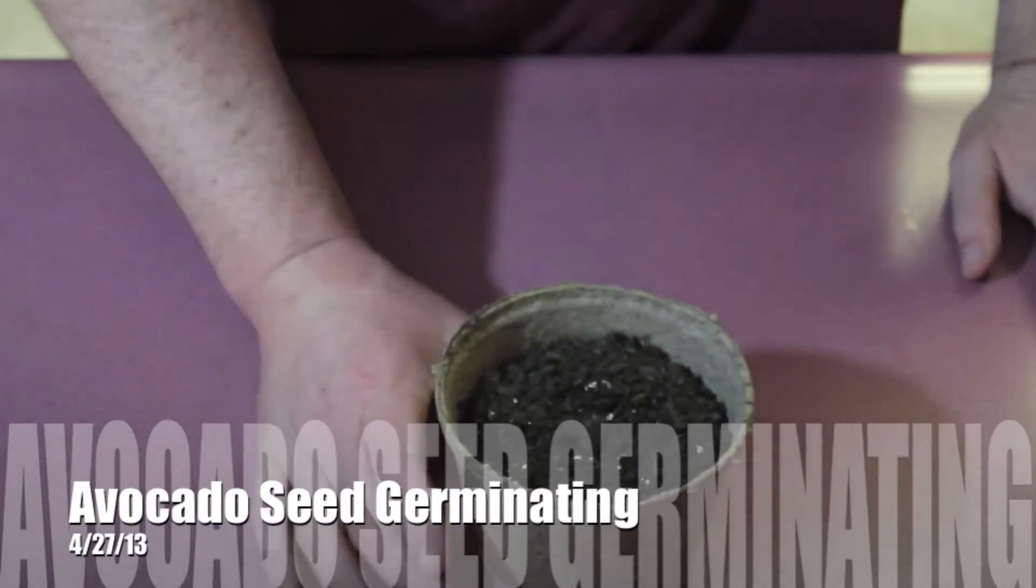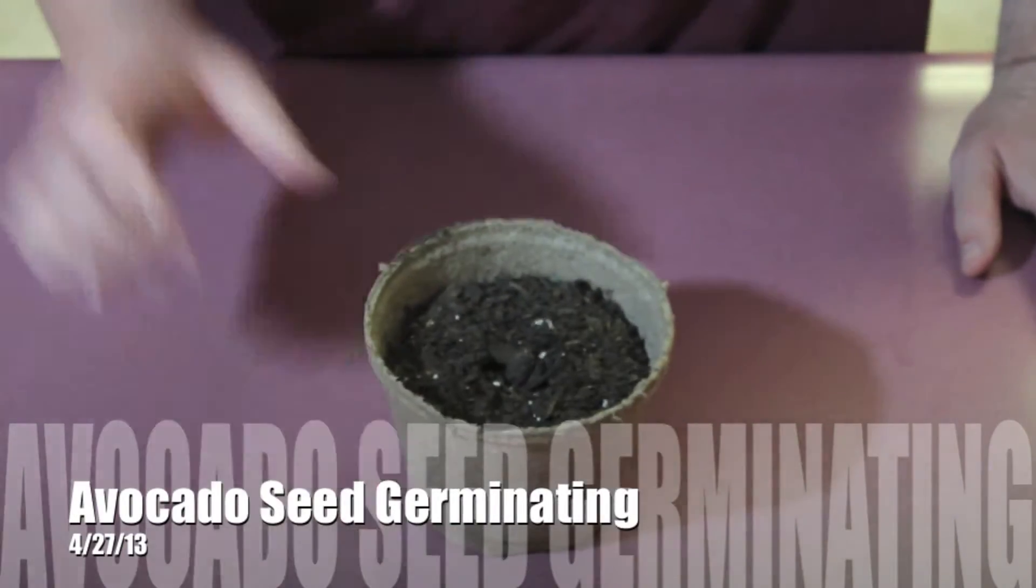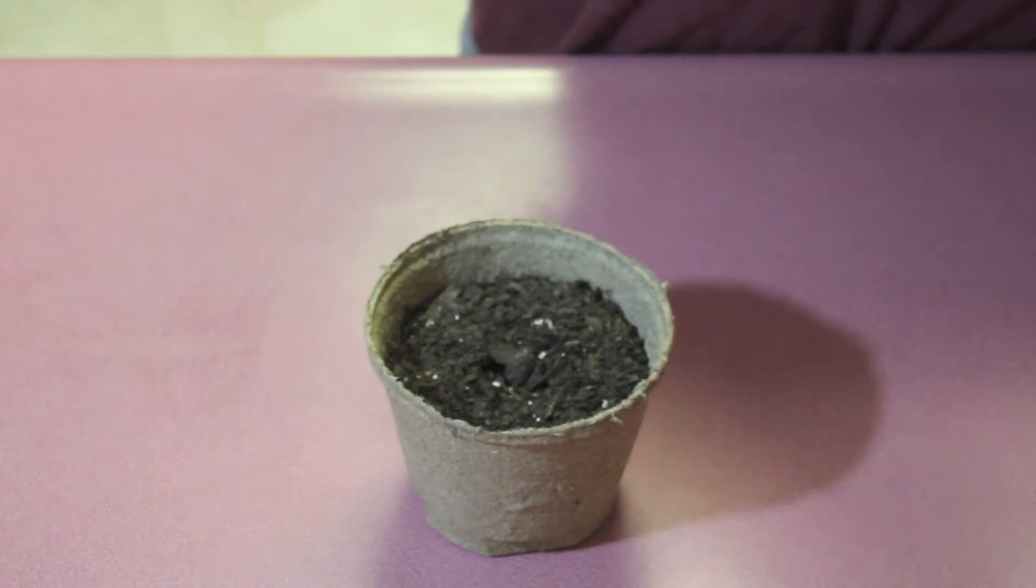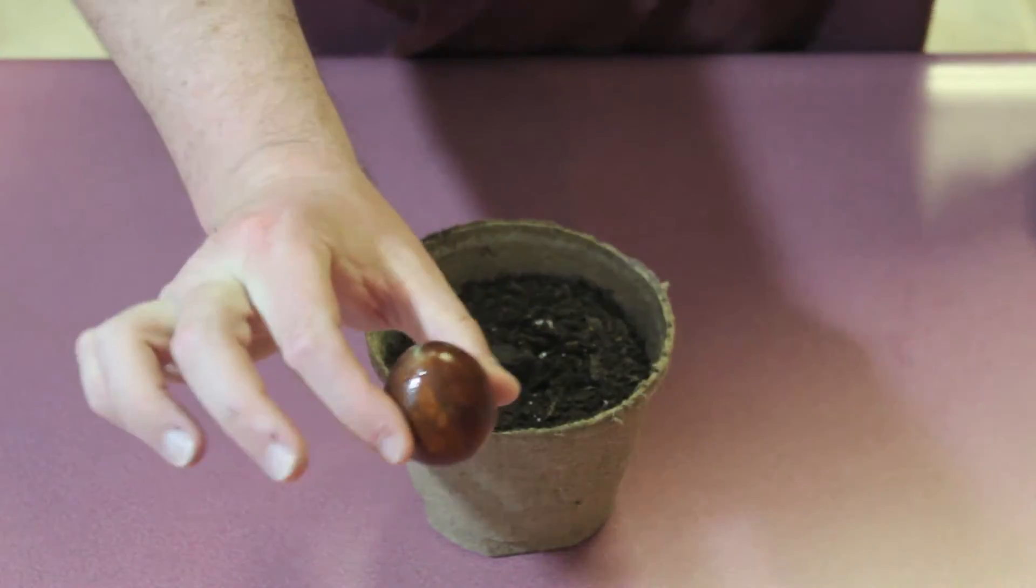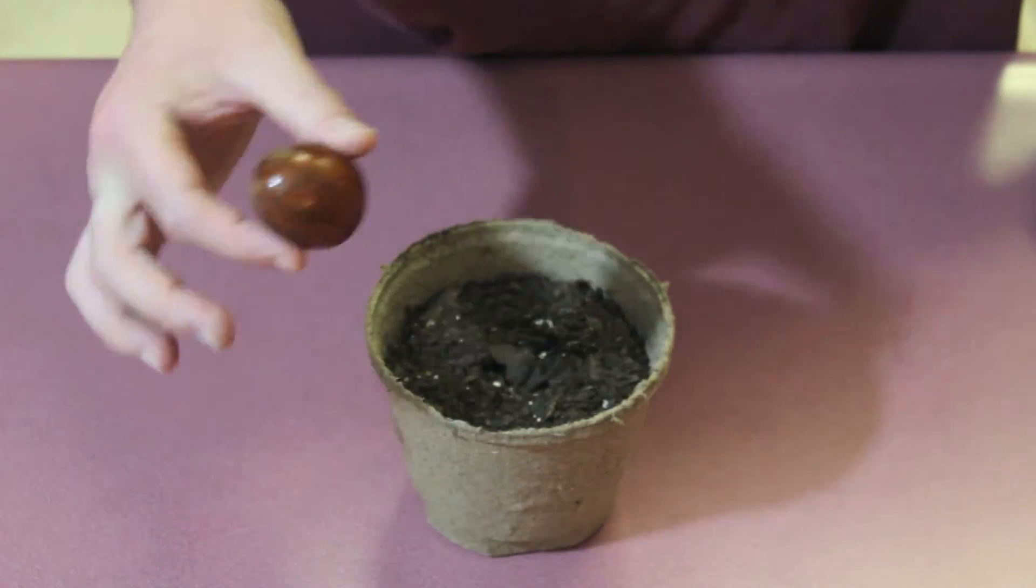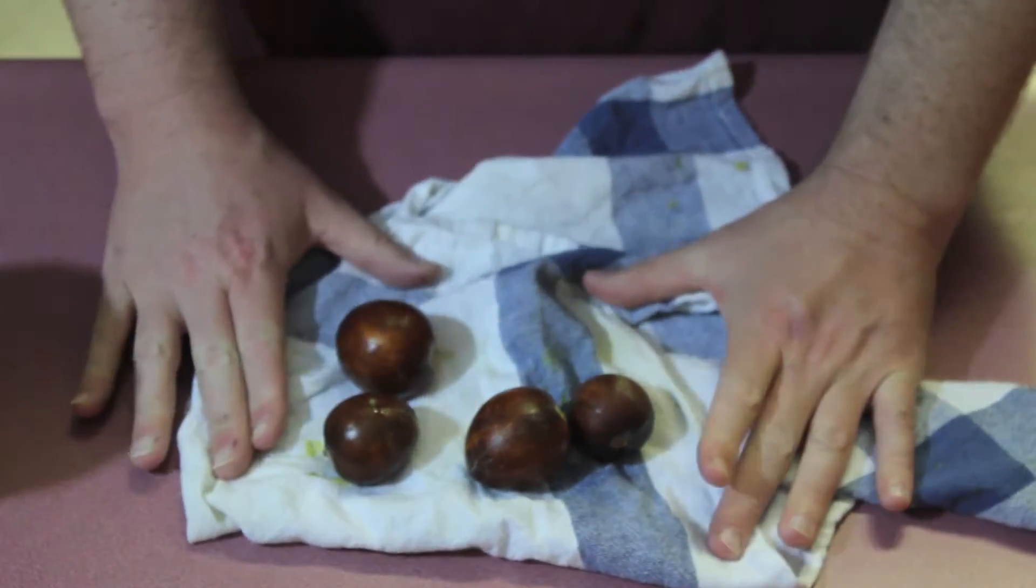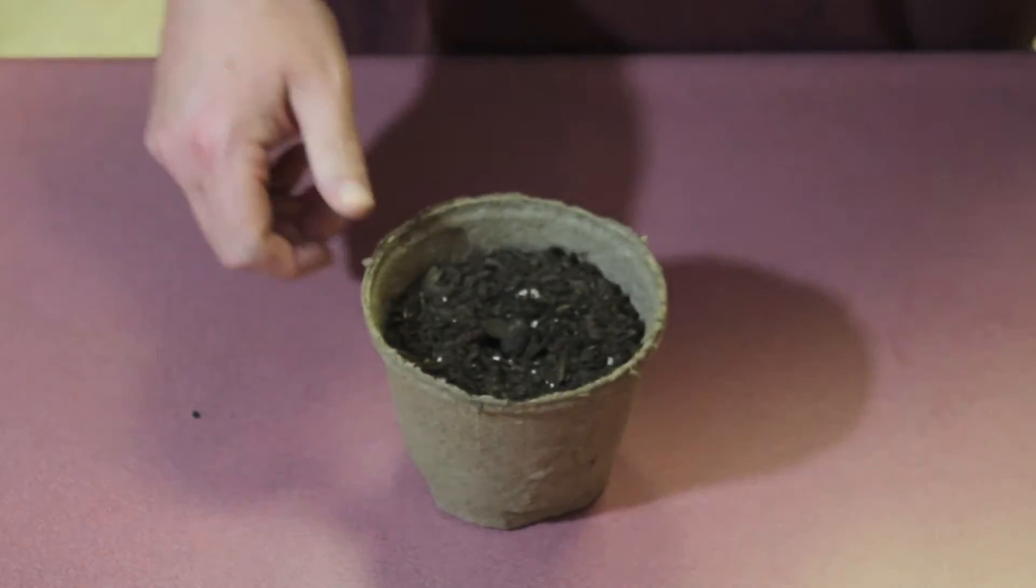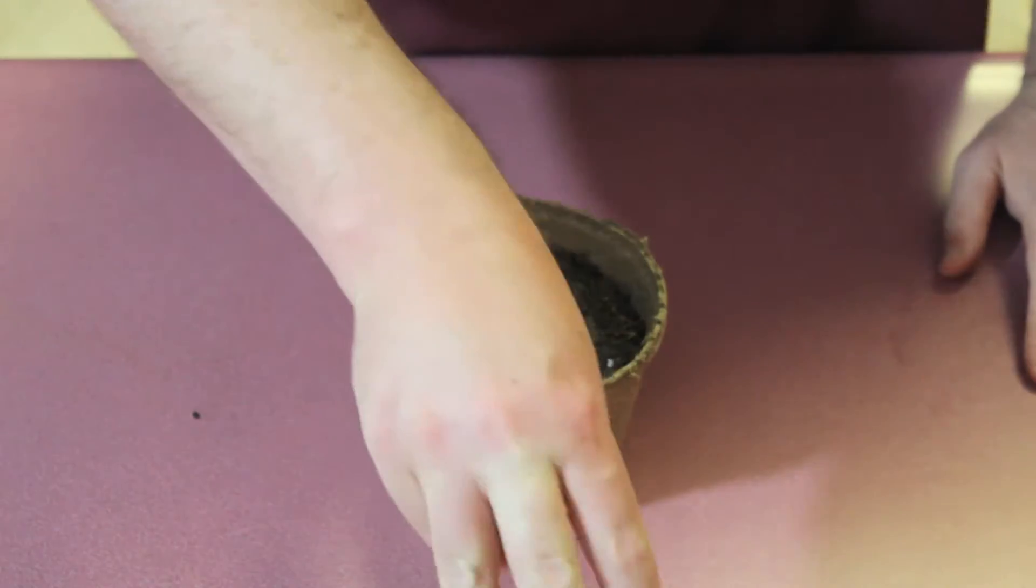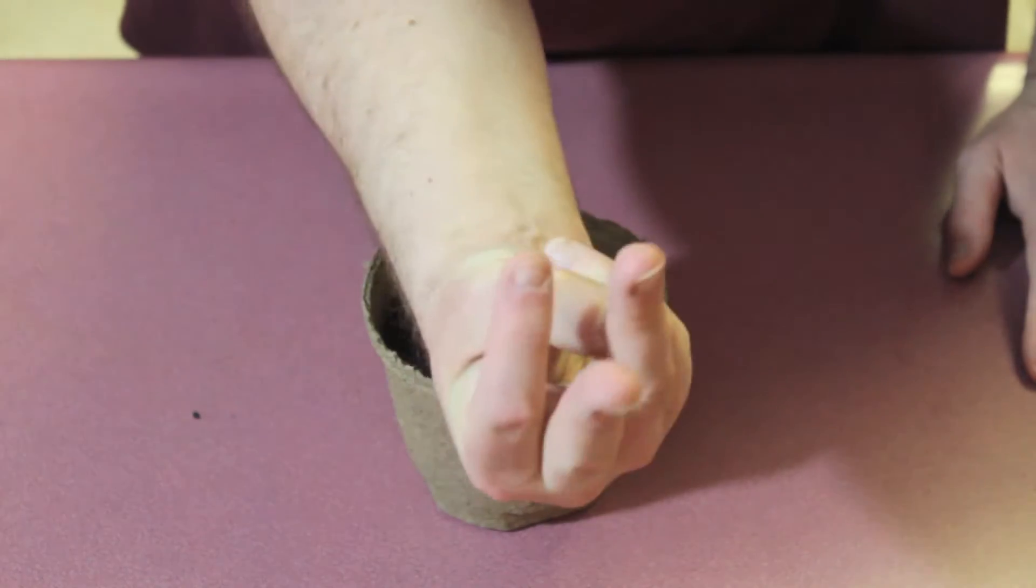Alright, so we've made the guacamole. Now we're going to take the seeds and try to germinate them. We're going to do that in three ways. I have four different seeds here, so we're going to try three ways that I've read about online.